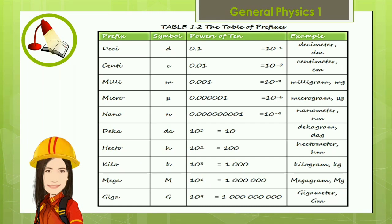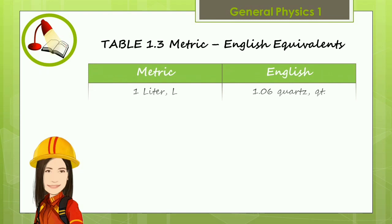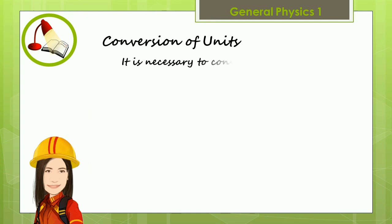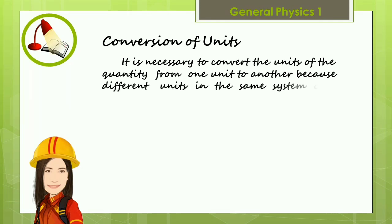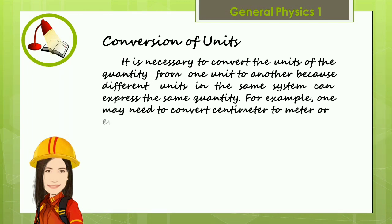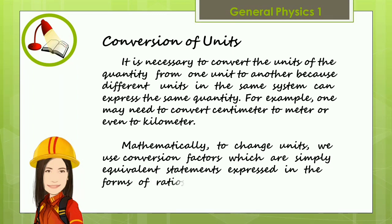The tables provided here are very much significant and essential in the conversion of units. Talking about conversion of units, it is necessary to convert the units of a quantity from one unit to another because different units in the same system can express the same quantity. For example, one may need to convert centimeter to meter or even to kilometer. Mathematically, to change units, we use conversion factors, which are simply equivalent statements expressed in the forms of ratios.